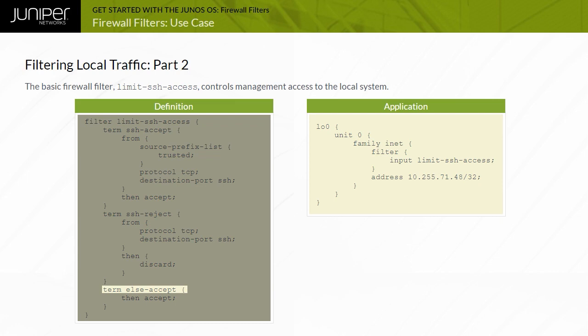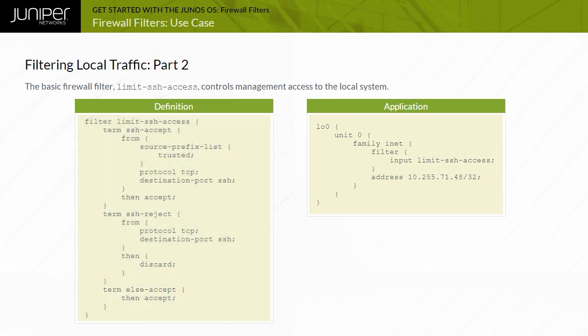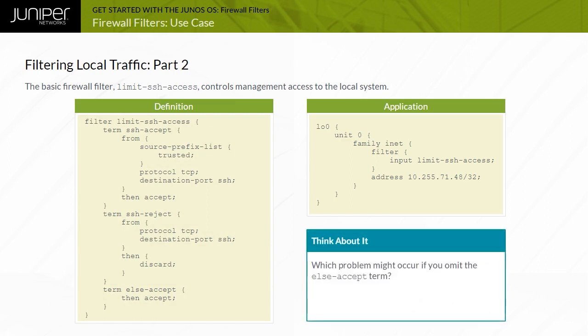Your firewall filters must account for all management and protocol traffic destined to the control plane. This accounting is accomplished using the else except term. If the else except term is not included in the filter, the software discards all control and management traffic not specifically permitted. This can cause significant disruption in environments using dynamic routing protocols such as OSPF and BGP, as well as management protocols such as SNMP or NTP.